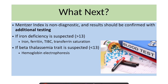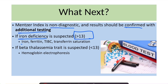The Mentzer Index is a non-diagnostic screening tool, and results should be confirmed with additional testing. If the Mentzer Index is more than 13, we need to suspect iron deficiency, and the patient needs to undergo additional tests like iron, ferritin, TIBC, and transferrin saturation.